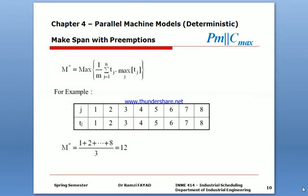Make span with preemption - where you're allowed to interrupt the job - is known as the McNaughton algorithm or wrap-around algorithm. I'm going to show you how it works. First we have eight jobs.